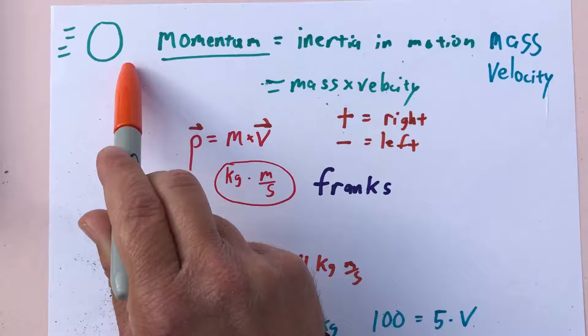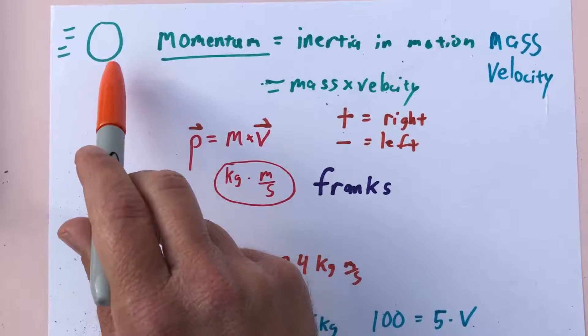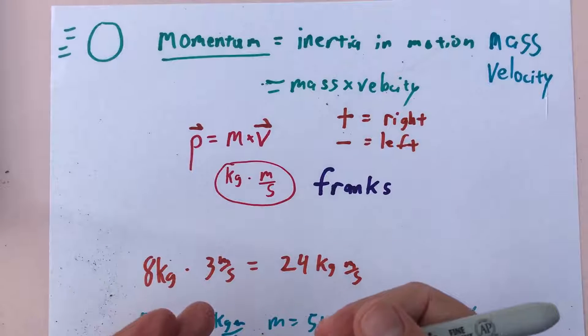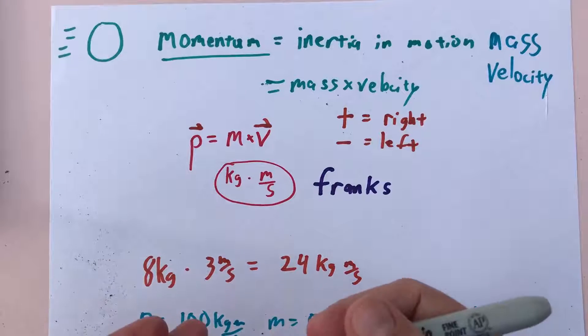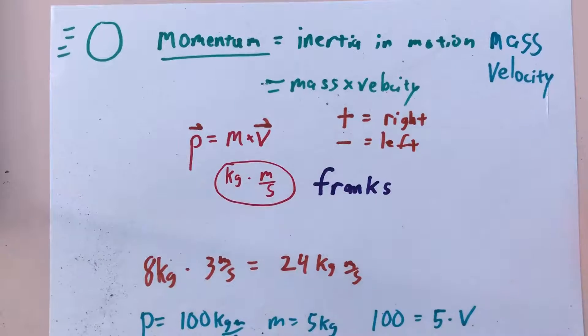So again, momentum is basically how much something wants to stay moving. The more mass it has, the more it wants to stay moving. The more velocity it has, the more it wants to stay moving. And we can give it an actual number in kilogram meters per second.